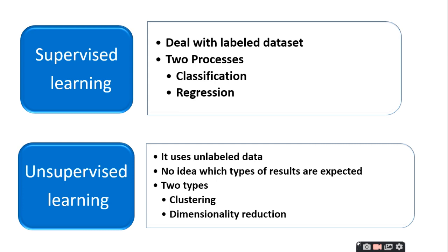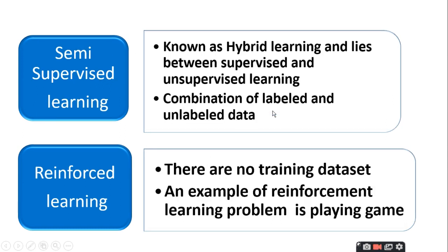There are two types of unsupervised learning, and if you say, I will make a detailed video on it. I already taught you regression. Now, semi-supervised learning is known as a hybrid learning and lies between supervised and unsupervised learning.